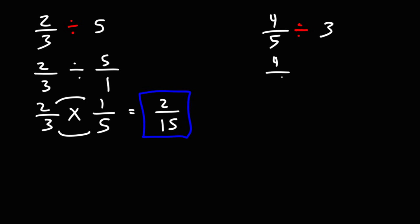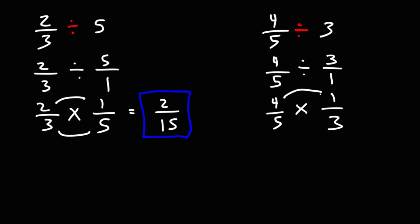Now let's do the same for the next problem. So 4 fifths divided by 3 — we're going to convert 3 into a fraction by putting it over 1. Now, using keep change flip, we'll keep the first fraction the same, change division to multiplication, and flip the second fraction. So now let's multiply across: 4 times 1 is 4, 5 times 3 is 15. So the answer is going to be 4 over 15.